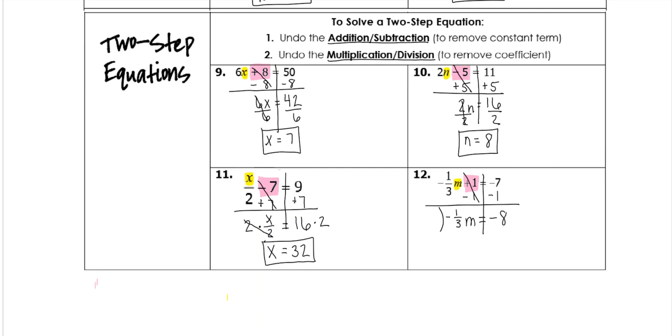We want to multiply both sides by its reciprocal, which is a negative 3 over 1. The negative in the negative gives me a positive. And 3 divided by 3 is just 1, or 1m. Negative 8 times a negative 3 is positive 24. Don't forget it's over 1, which means that m is 24. And that's the end of our notes.